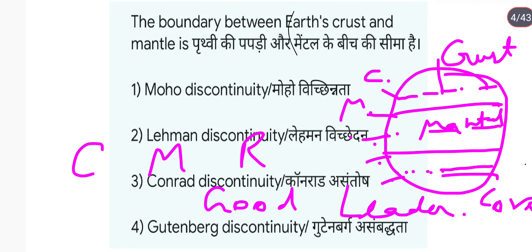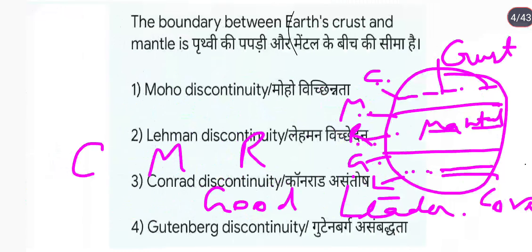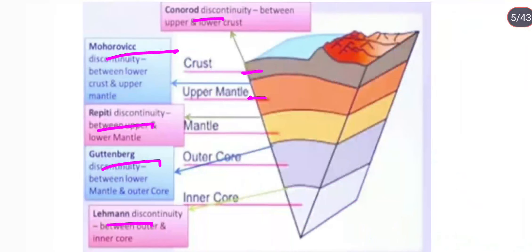CMR Good Leader का full form है: Conrad discontinuity, Mohorovičić discontinuity, Repetti discontinuity, Gutenberg discontinuity, और Lehmann discontinuity। यहाँ देखिए — यह crust है, यह mantle है (upper mantle, lower mantle), और यह outer core, inner core। इनके बीच Conrad, Mohorovičić, Repetti, Gutenberg, और Lehmann discontinuities हैं। Question पूछ रहा था: boundary between earth crust and mantle — इसको कहते हैं Mohorovičić discontinuity।